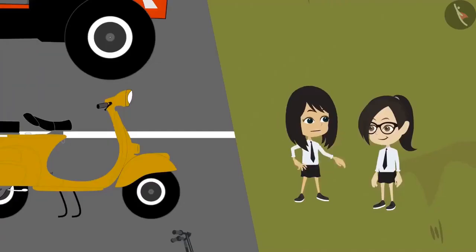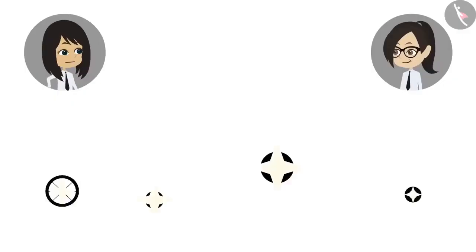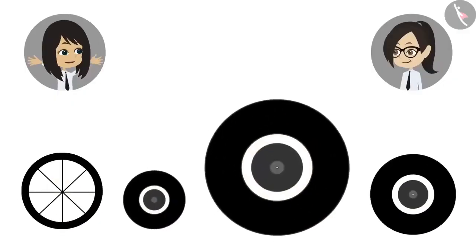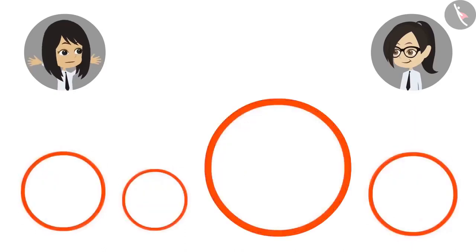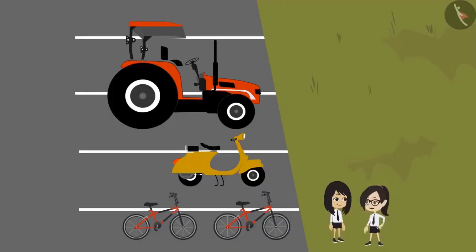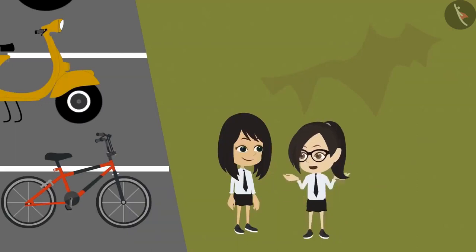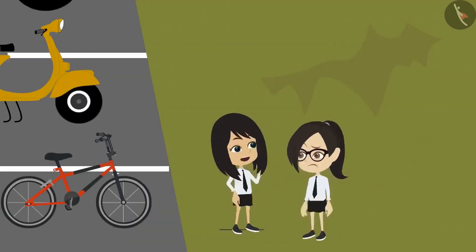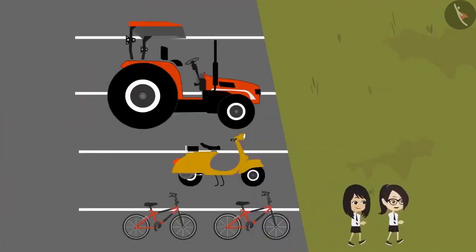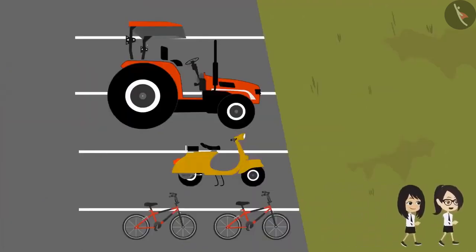You noticed one thing? We saw four different sizes of tyres, but all are in the shape of a circle. Yes, you are right, Neha. All are circular. But how will we know how big or small they are compared to each other? Why not ask Sir in class today? Yes, let's ask Sir.